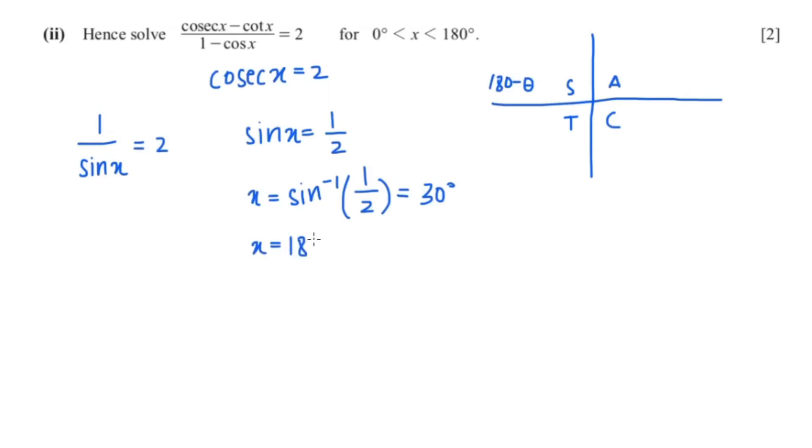So x equals 180 minus 30, and that would give me 150. So our x values are 30 degrees and 150 degrees.